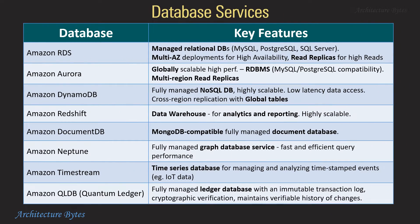Database services: Amazon RDS is a managed relational database that supports multi-AZ deployments for high availability and read replicas for high read performance. Amazon Aurora is a globally scalable RDBMS that supports multi-region read replicas. DynamoDB is a fully managed NoSQL database that supports cross-region replication with global tables.